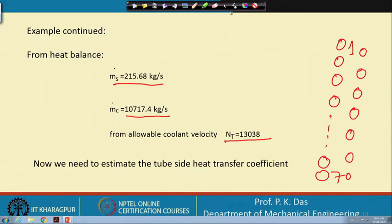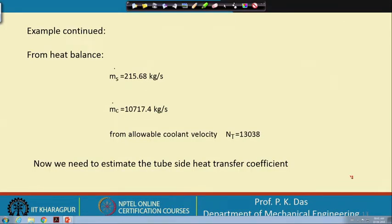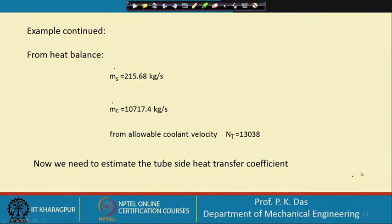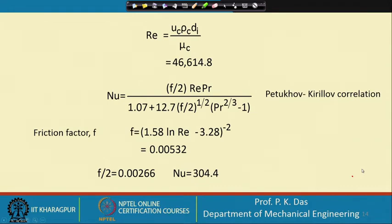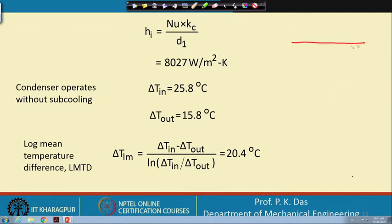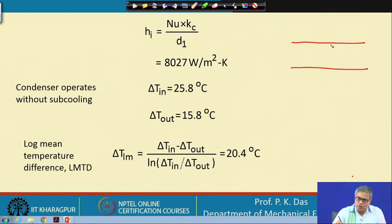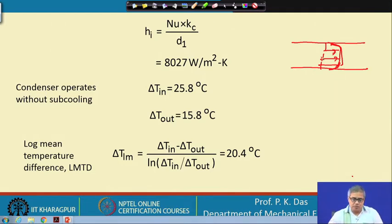Now we need to estimate the heat transfer coefficient. For the inside heat transfer coefficient in the tube, we will have turbulent flow. From experience one can tell that the coolant flow will be turbulent, and from Reynolds number we will get this — we have probably gone forward a little bit, so let us go back.